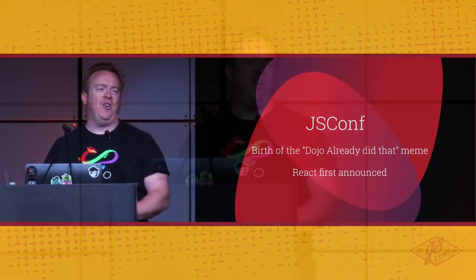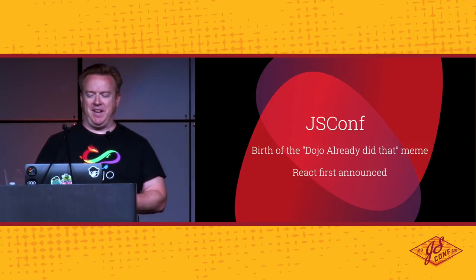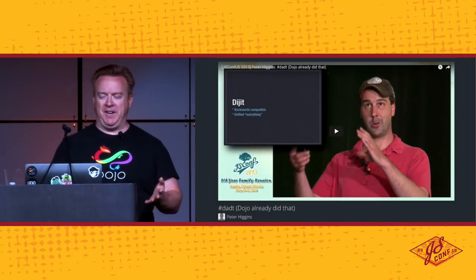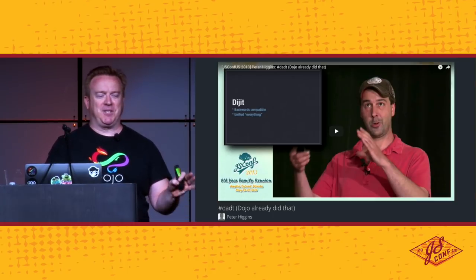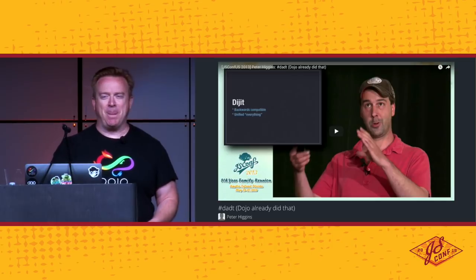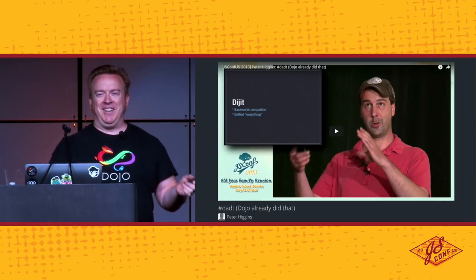The funny thing was jQuery was really popular, but Dojo had promises, modules, a build system, the equivalent of web components, and some VDOM-ish stuff — all of these things back in 2007. And so this meme came to happen. JSConf 2013 was also the year React was first announced, which was kind of a cool thing. Here's Pete Higgins giving the talk 'Dojo already did that,' and they managed to capture an awesome screenshot of him making a ridiculous face.